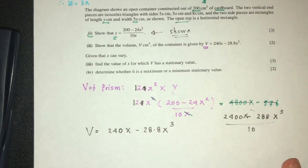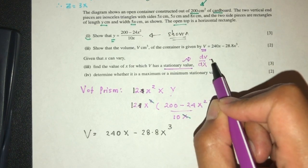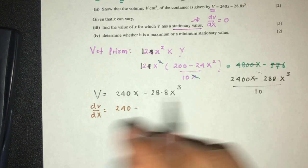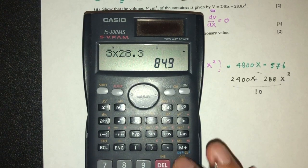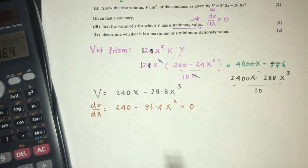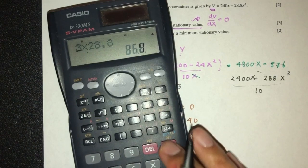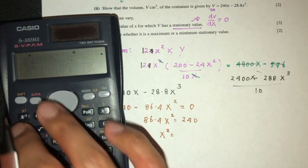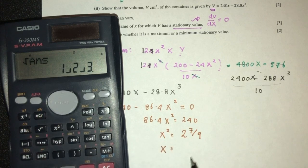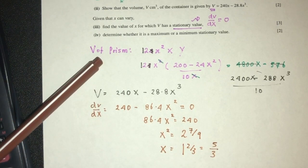Now let's move on to part 3 of the question. We have to find the value of x for which V has a stationary value. When this happens, we know dV by dx has to be 0. So dV by dx has to be 240 minus 3 times 28.8, that should be 86.4x square. Equate that to 0. So you will have 86.4x square is 240. Now x square is 240 divided by 86.4, 27 over 9. x will be, with our answer, that should be 1 and 2 over 3, which is 5 over 3.